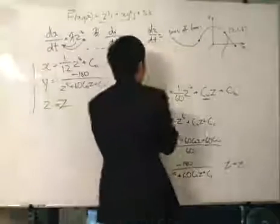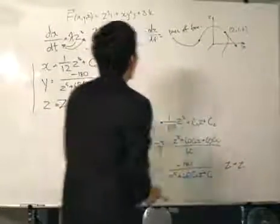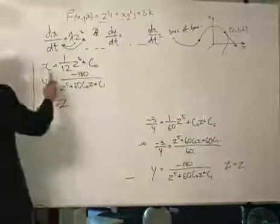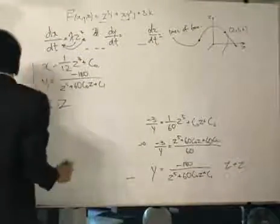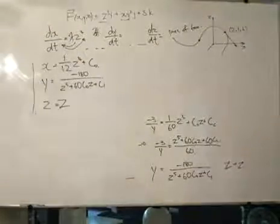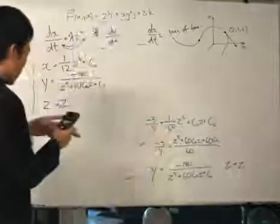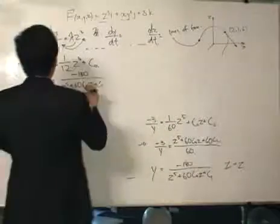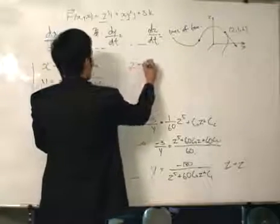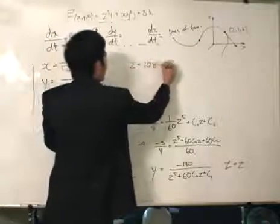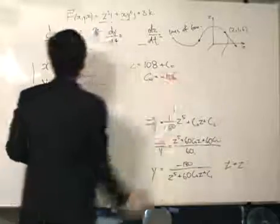Now we just want to complete the solution by finding the particular solution of 2, 1, and 6. So let's see what we have over here. When x is 2, z is 6, and I need to get a calculator for this. 6 to the power of 4, it's a big number. You divide that by 12, so it'll be 2 equals to 108 plus c0. c0 is equals to minus 106.